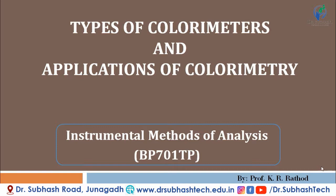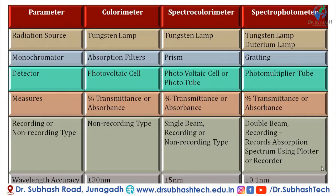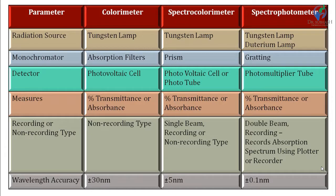First, we will see types of instruments used for the process of colorimetry. There are basically three instruments: colorimeter and spectrophotometer are the two major, widely used instruments, and spectro-colorimeters are also used. So three types of instruments are used: first is colorimeter, then spectro-colorimeter, and then spectrophotometer.